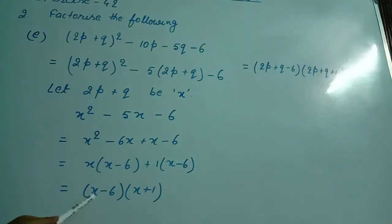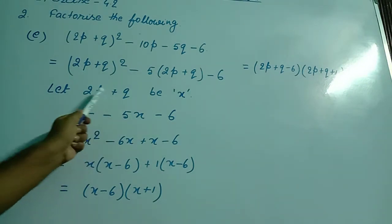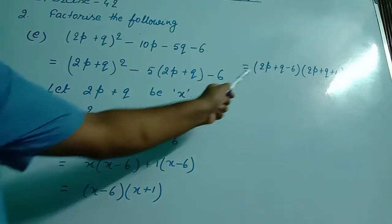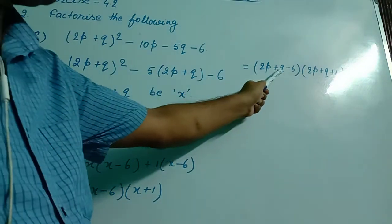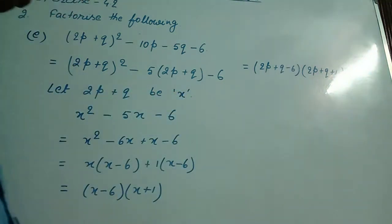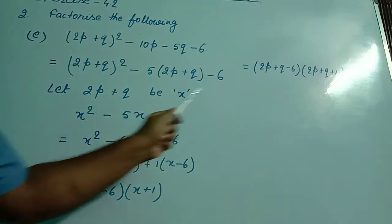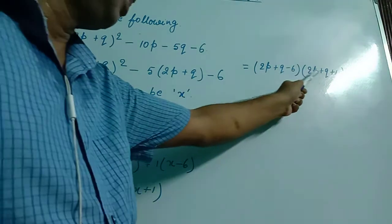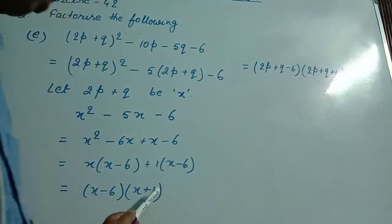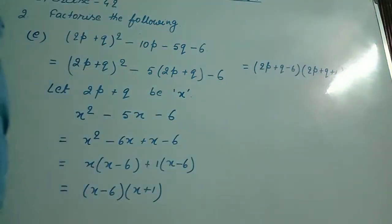Ultimately, I substituted back the value of x, which is 2p + q. So I wrote (2p + q - 6)(2p + q + 1). These two are the factors.